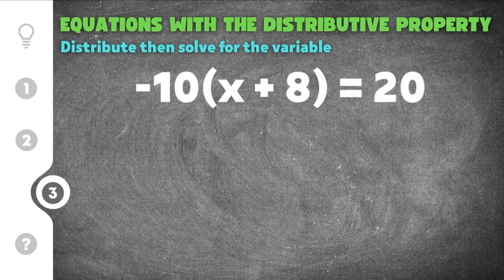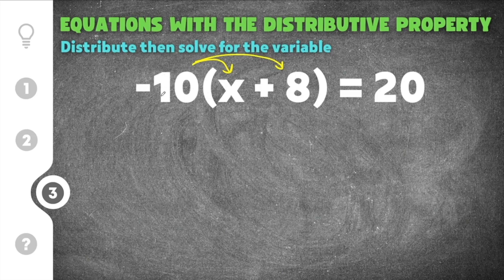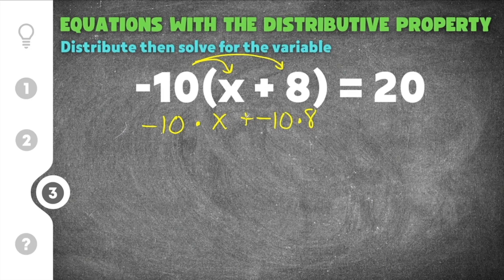The third practice problem gives us negative 10 times the quantity x plus 8 equals 20. We distribute the negative 10 to everything inside the parentheses — we must include the negative when we multiply. So negative 10 times x is negative 10x, and negative 10 times 8 is negative 80. This gives us negative 10x plus negative 80 equals 20.